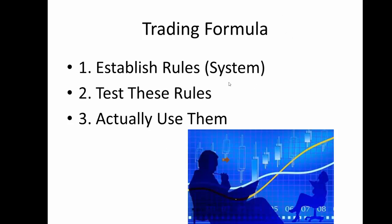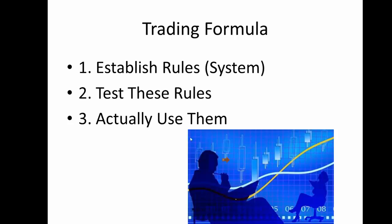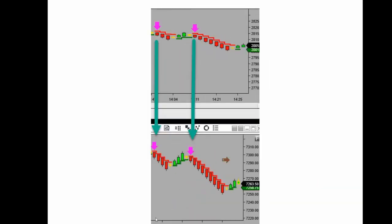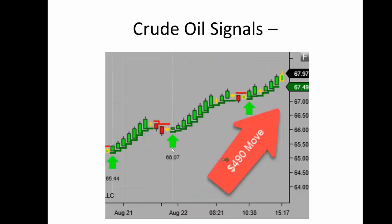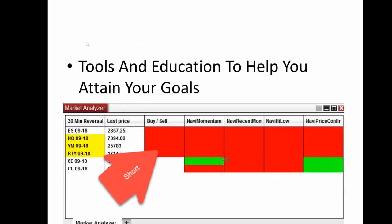Some things you'll need to do to trade successfully: one, you need to have a system. Once you have a system, I recommend you test it in simulation mode. Number three, you need to actually use the system. Have a system, test the system, actually use the system. Here are concurrent buy signals, concurrent sell signals, our audible and visual alerts, and our trade finder. When everything's red it's indicating the market can move down; if everything's green, it indicates it can move up.